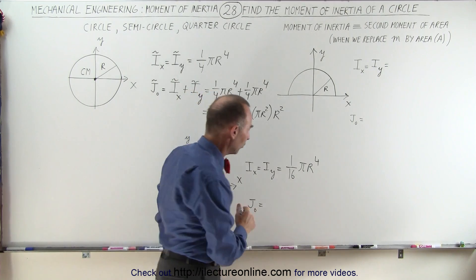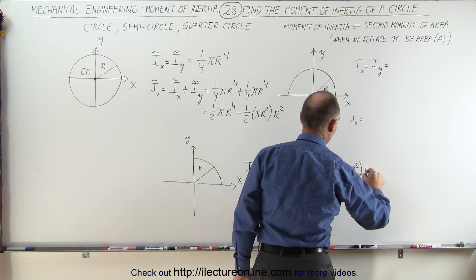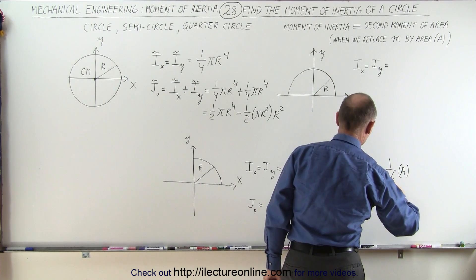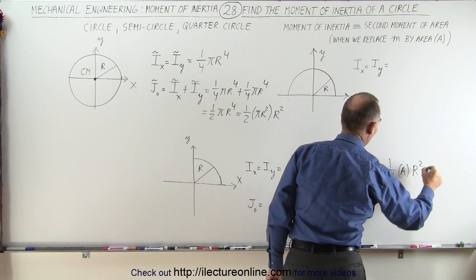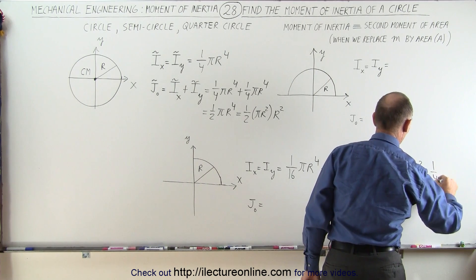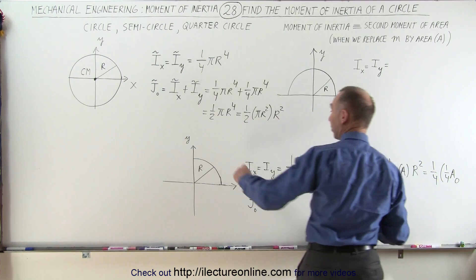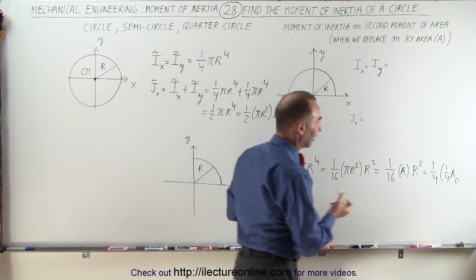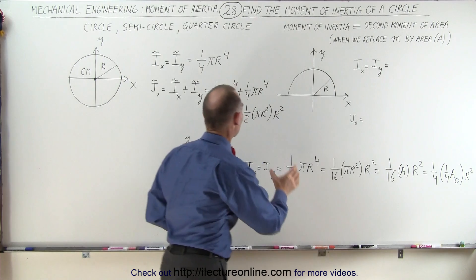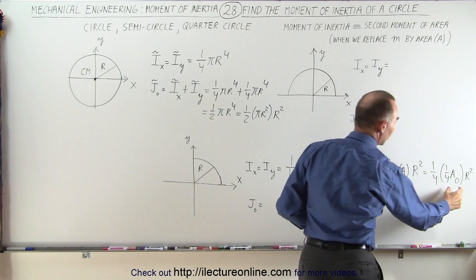If we pull out pi r squared, this is equal to one-sixteenth times pi r squared times r squared, or one-sixteenth the area of a full circle times r squared. Or if we want to pull out the area of a quarter circle, this can be said to be one-quarter times one-quarter the area of a full circle — which happens to be the area of a quarter circle — times r squared.